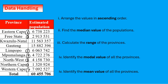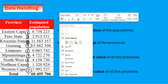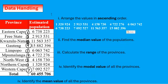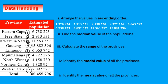Limpopo is followed by Eastern Cape, then Western Cape, then KZN at number eight, and Gauteng has the biggest population size. So those are the values arranged in ascending order.